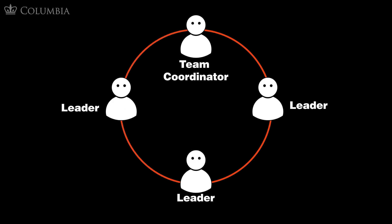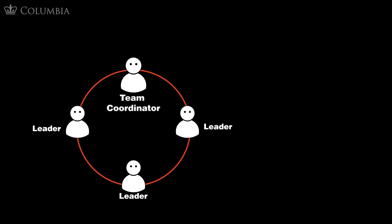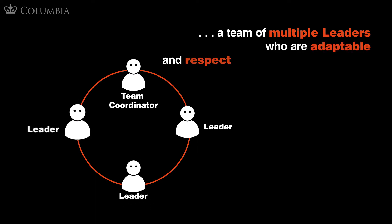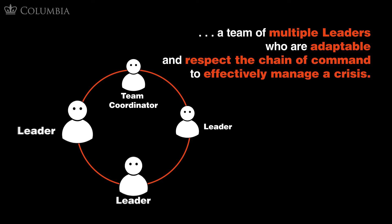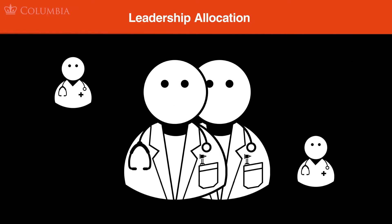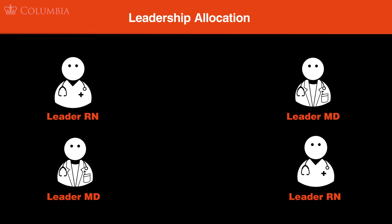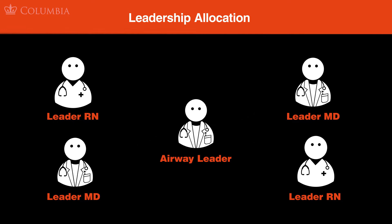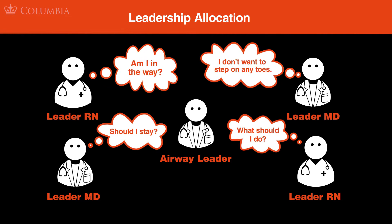An ideal team is a team of multiple leaders who are adaptable and respect the chain of command to effectively manage a crisis. Recognize that coordination can change and will need to change at a moment's notice, requiring team members to adapt to shifting circumstances. There will be lead nurses and lead specialists who will be part of this complexity. For example, there may be an airway leader who has several assistants. Leadership allocation is about determining who will lead in each task in a crisis. Warning: it's easy to forget to do this in the fog of war when our cognitive burden is high. If roles aren't clear, the potential of chaos increases.